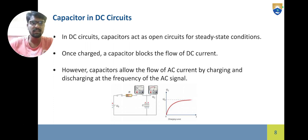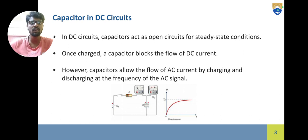Capacitors in DC circuits — in DC circuits, capacitors act as an open circuit for steady-state conditions. Once charged, a capacitor blocks the flow of DC current. However, the capacitor allows the flow of AC current by charging and discharging at the frequency of the AC signal.